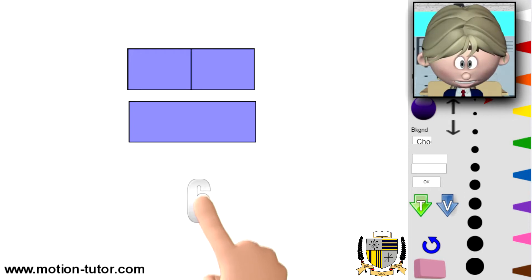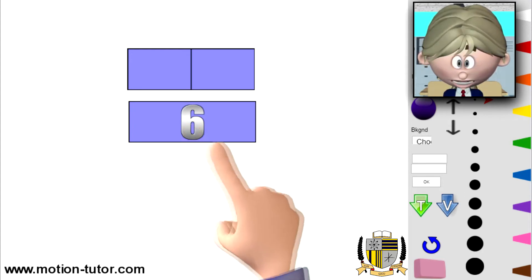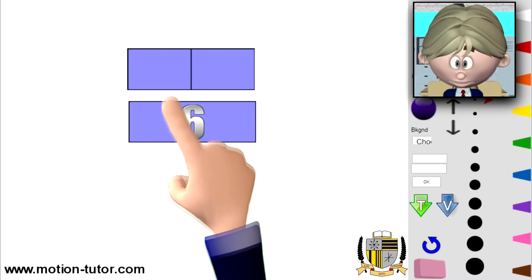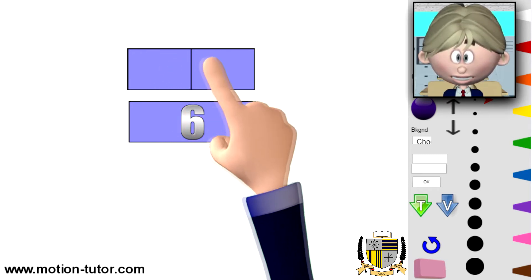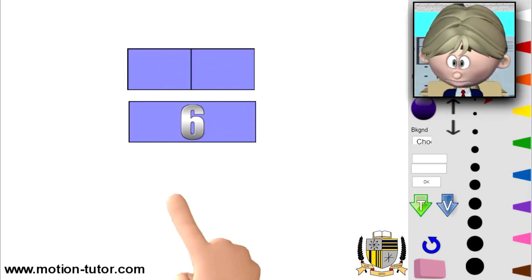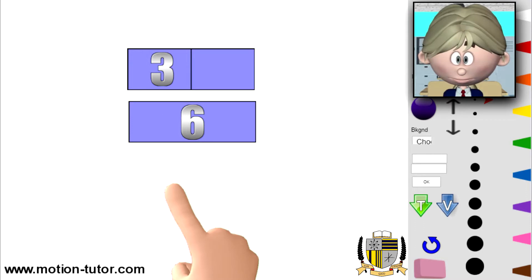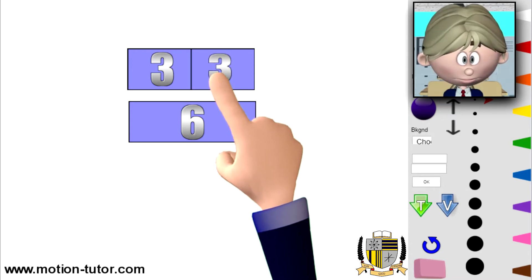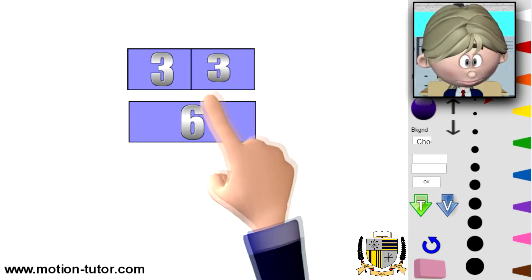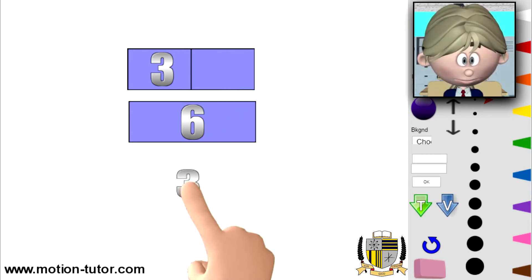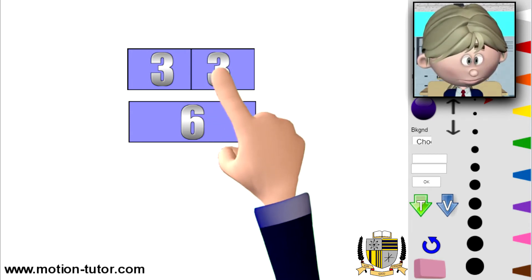Let's say it's the number six. So this whole thing represents six, right? So that means these two would be three and three.